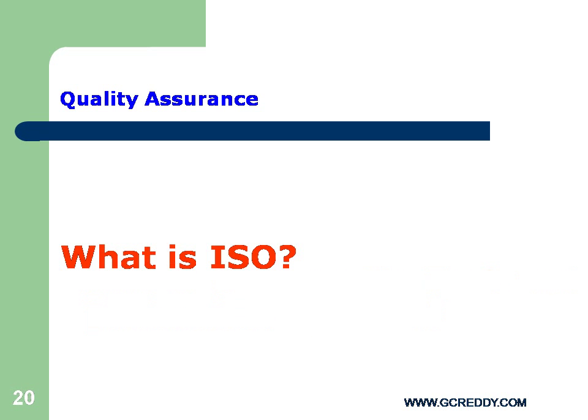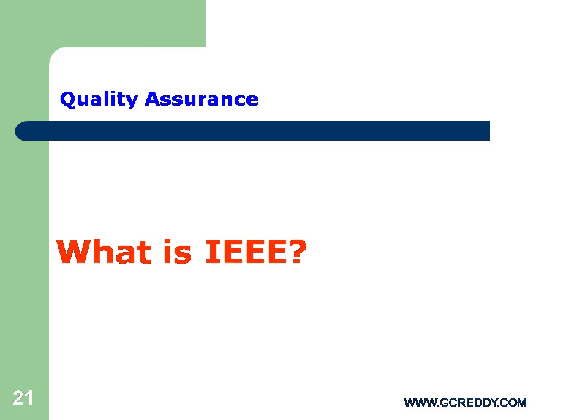What is ISO? ISO means International Organization for Standardization. It is a worldwide federation of national standard bodies that creates standards and enforces their application. What is IEEE? Institute of Electrical and Electronics Engineers is the world's largest technical professional society. It provides standards for power, energy, telecom, information technology, and aviation industries.